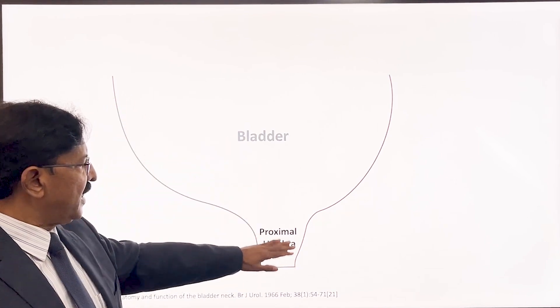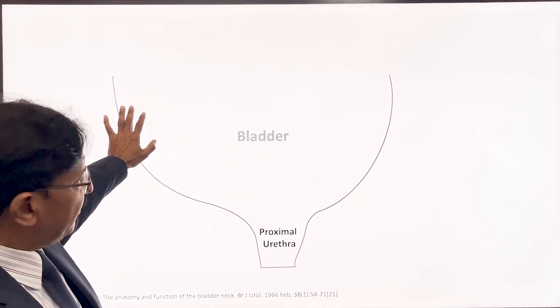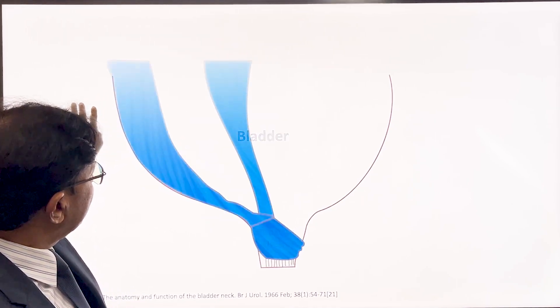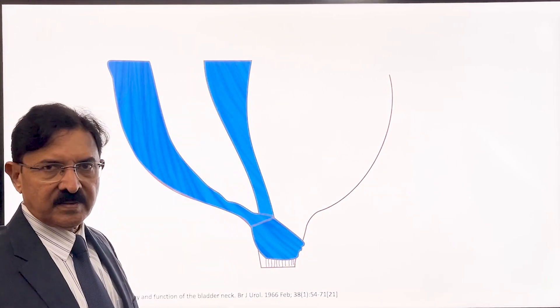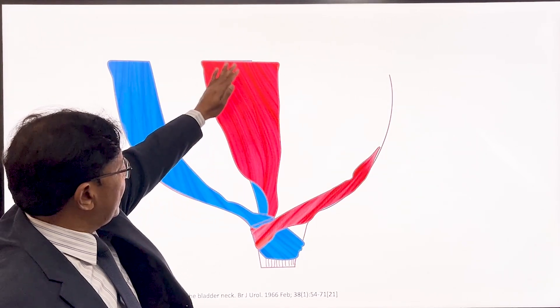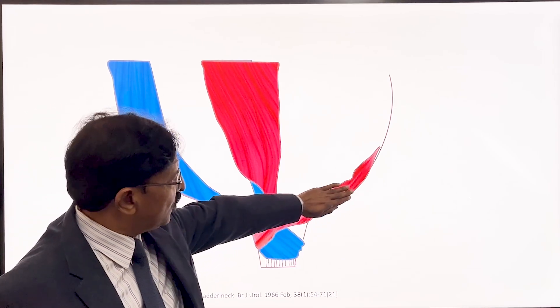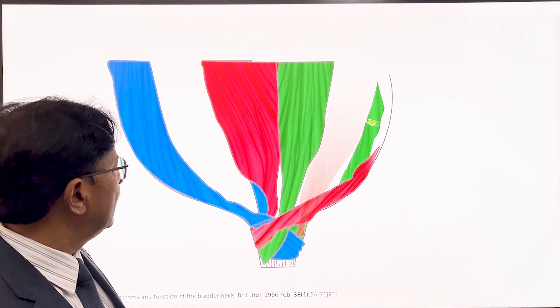Here you can see the bladder and the proximal urethra. I will show you how the outer longitudinal detrusor muscle fibers descend and course around the urethra and return back to the bladder. One bundle of fiber descends and courses around the bladder neck in one direction; a second bundle courses in another direction. There are many such different bundles descending from the bladder and encircling around the proximal intramural urethra.